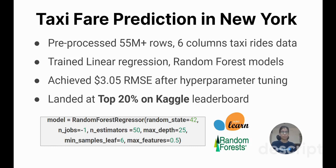My first project is machine learning with Python — predicting cab fares in New York City. I downloaded this dataset from Kaggle; it had over 55 million rows and 6 columns. After data analysis and cleaning, I added features such as trip distance, pickup cluster, and drop cluster to minimize the root mean square error, which was the evaluation metric. I trained linear regression and random forest models using scikit-learn. After tuning the hyperparameters, my best model achieved a root mean square error of $3.05, landing me in the top 20% on the Kaggle leaderboard.